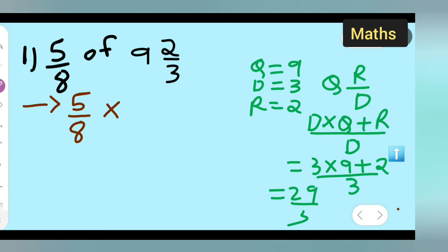It is not 23, it is 29 upon 3. Now you have to see if anything is getting cancelled.